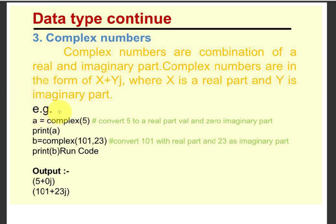Let's see its example. A equal complex 5. This is the way to assign the complex number. It converts 5 to a real part value and 0 imaginary part. Let's execute the variable a with the help of the print method. Next, see b equal complex 101, 23. That converts 101 as the real part and 23 is treated as the imaginary part.